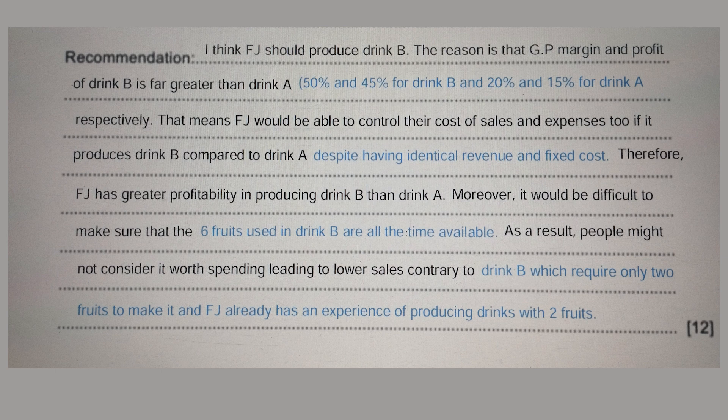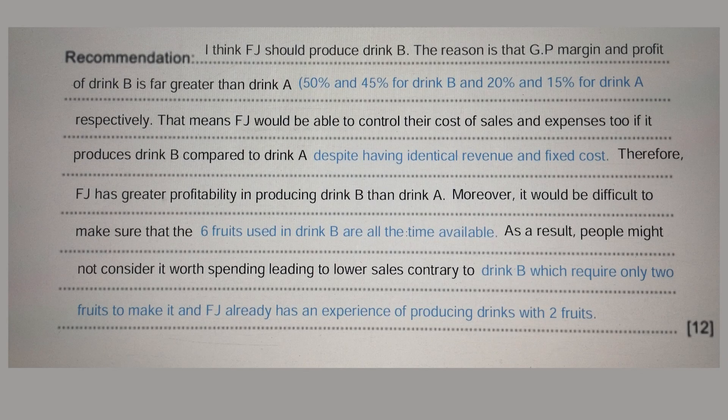Always make comparisons in your evaluation — because when justifying your point, you also have to reject the other option. If you only give reasons for accepting one drink without giving reasons for rejecting the other, you cannot get maximum marks. That means FJ would be able to control their cost of sales and expenses if it produces Drink B compared to Drink A. GP margin is higher because they are able to control their cost of sales.